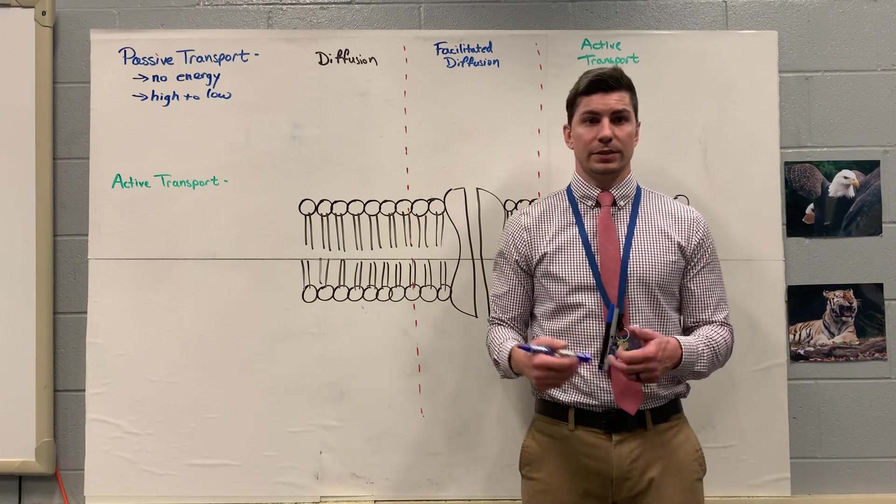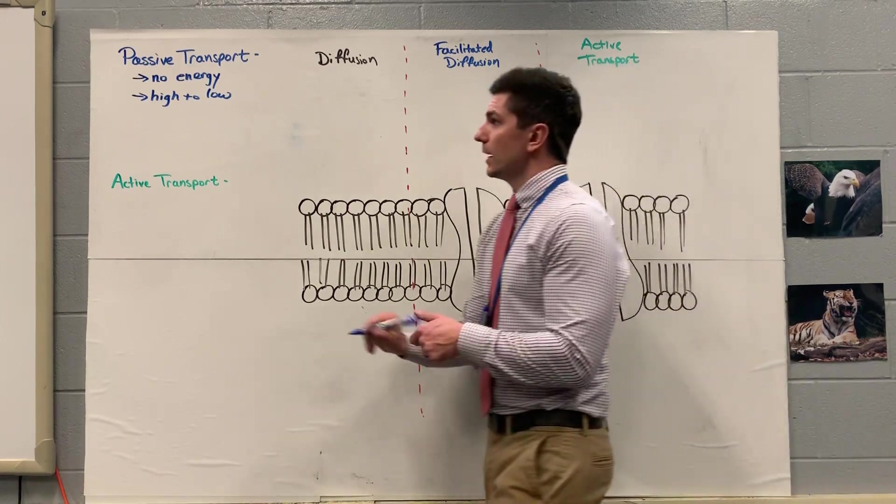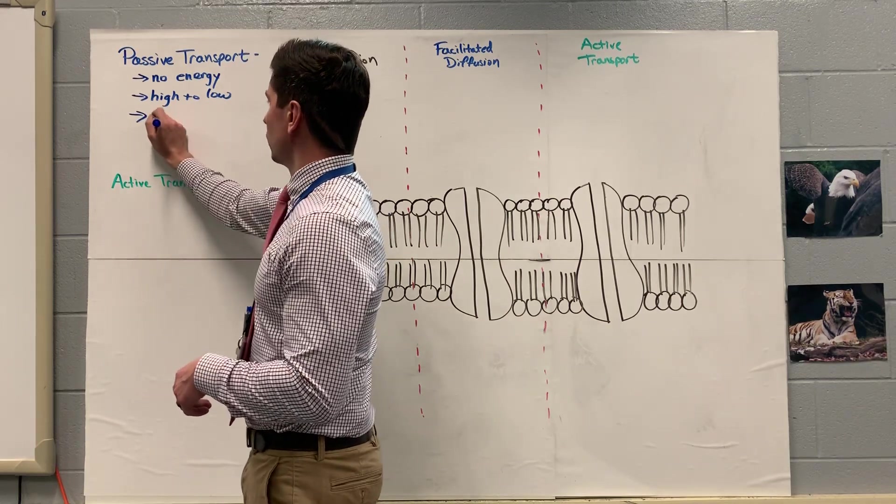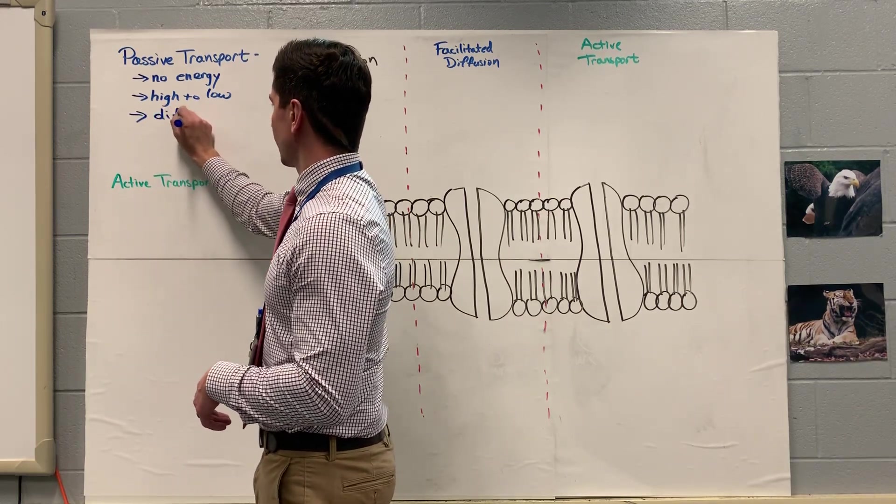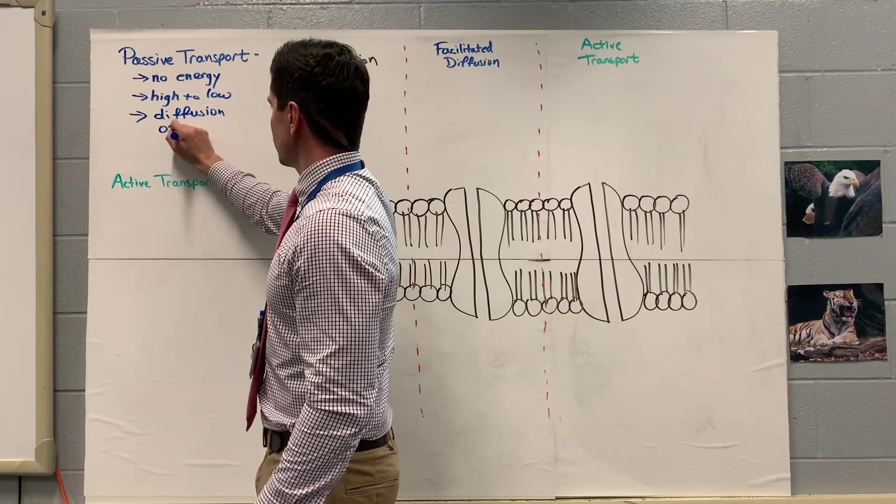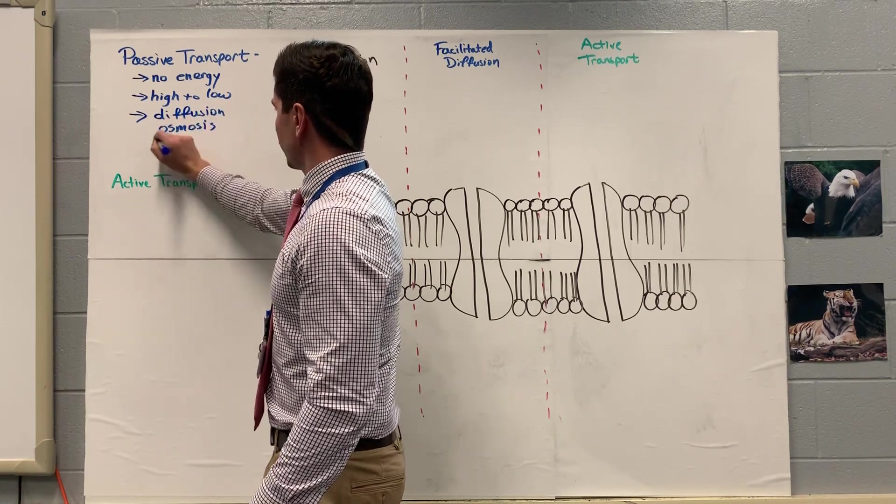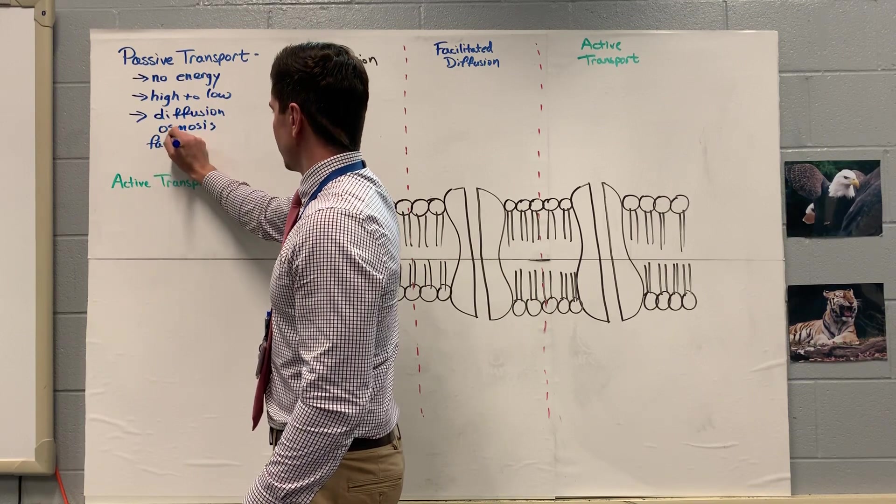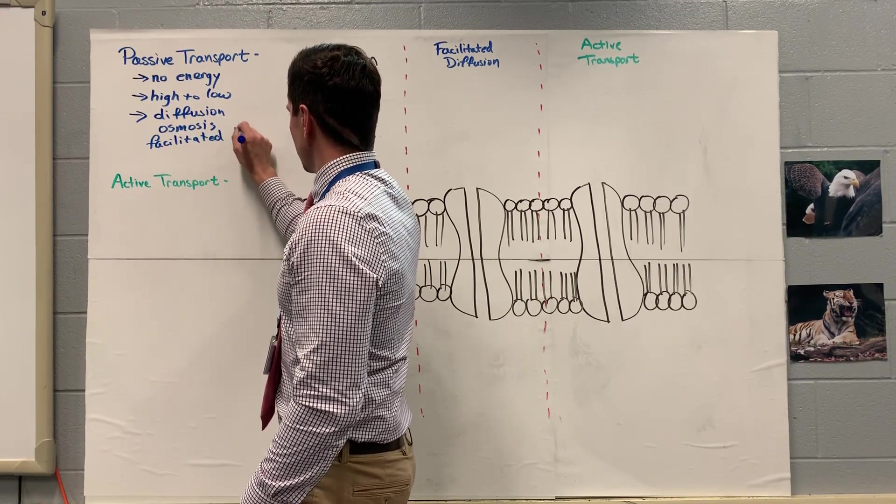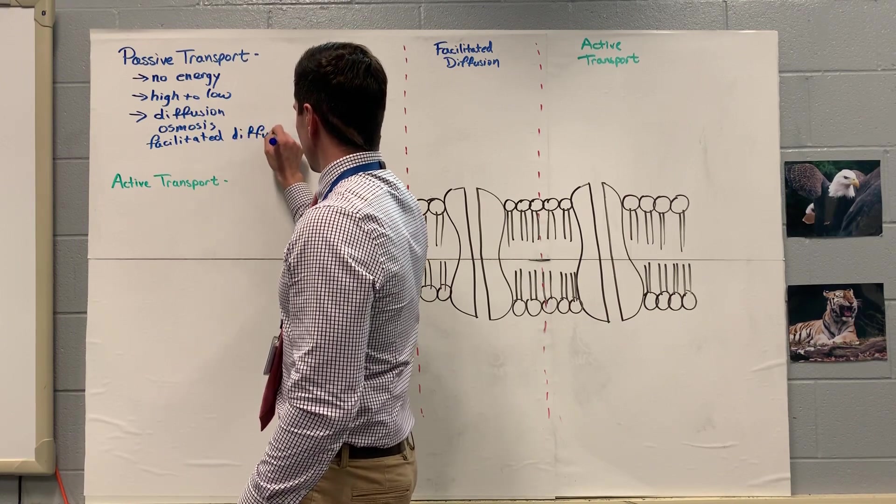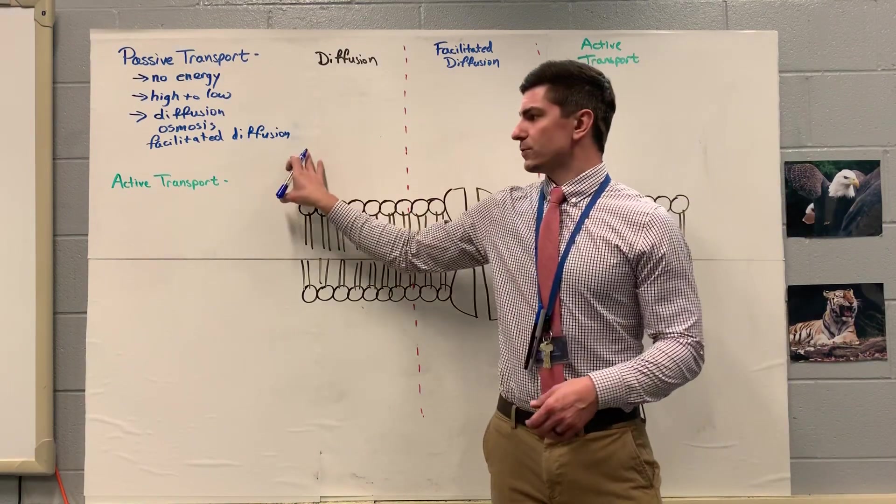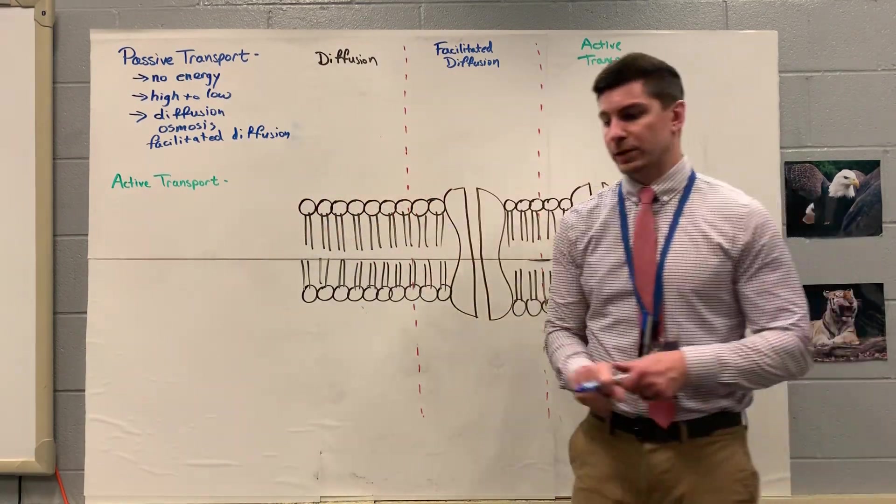And equilibrium is simply, hey, we've got equal amounts on both sides. And then lastly, for passive transport, just to go over the examples: we have diffusion, that's our first one. Our second one, we have osmosis. And our third one, we have facilitated diffusion. So those are our three types of passive transport, and we'll diagram each one of those.